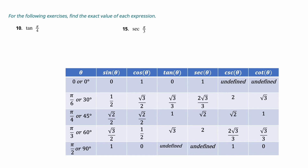To get the cosine column, use the 90° co-function rule: cosine(90° - θ) = sine(θ), so the cosine values are just the sine list written from bottom to top: 1, √3/2, √2/2, 1/2, 0. For tangent (sine over cosine): 0/1 = 0; (1/2)/(√3/2) = 1/√3 = √3/3; (√2/2)/(√2/2) = 1; (√3/2)/(1/2) = √3; and 1/0 is undefined.